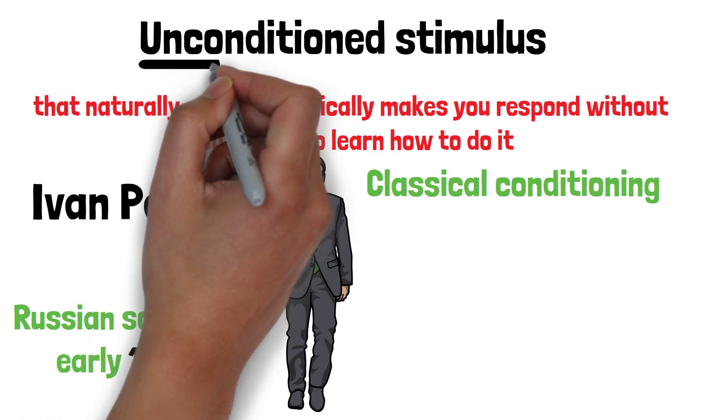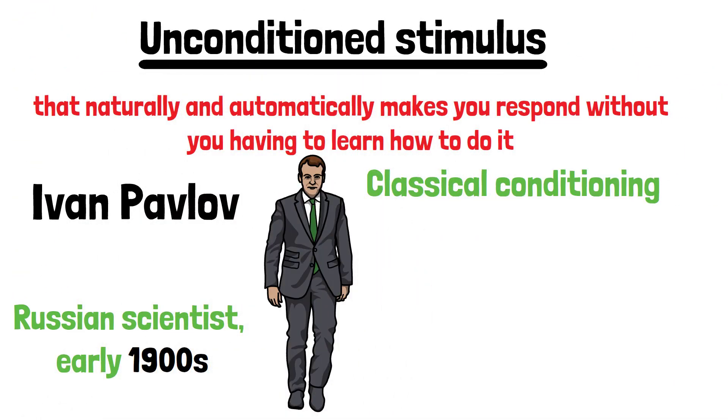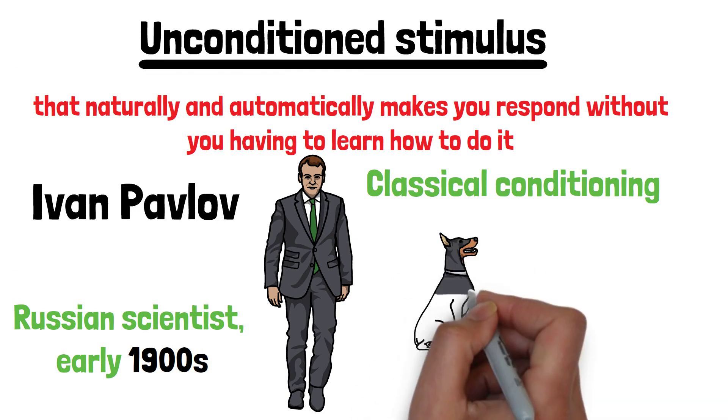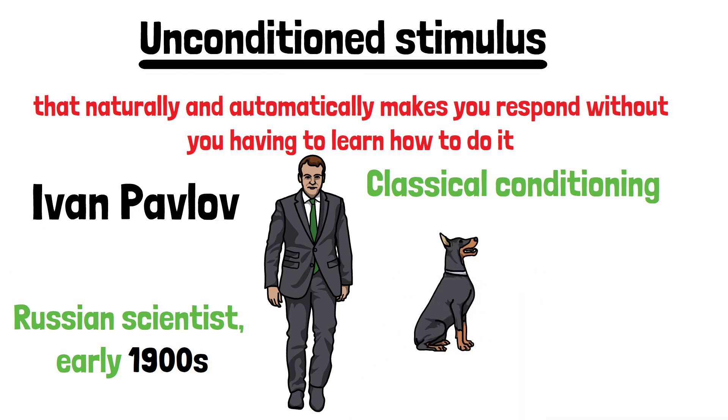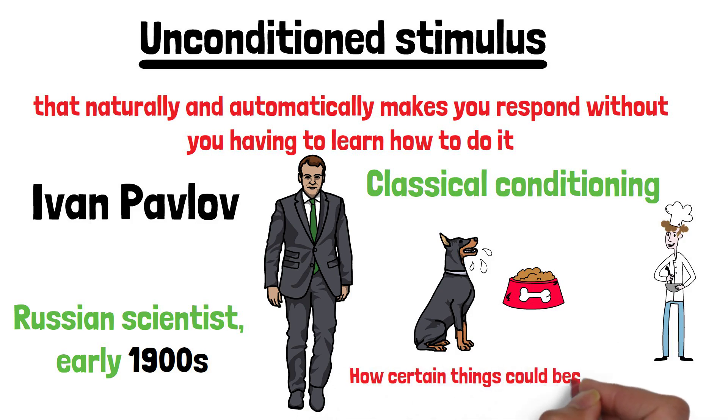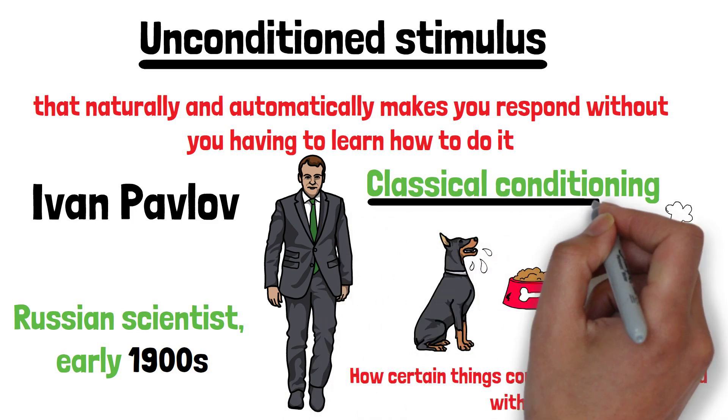The term unconditioned stimulus comes from Pavlov's experiments with dogs. Pavlov noticed that dogs would salivate not only when they ate food, but also when they saw the person who fed them. He studied how certain things could become associated with food, leading to the concept of classical conditioning.